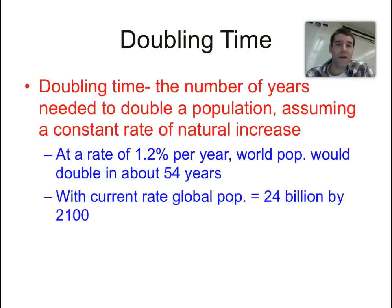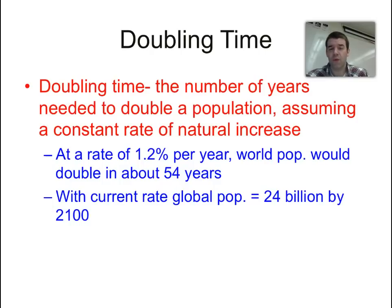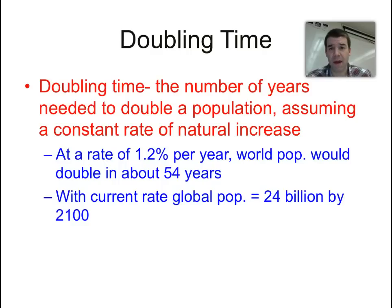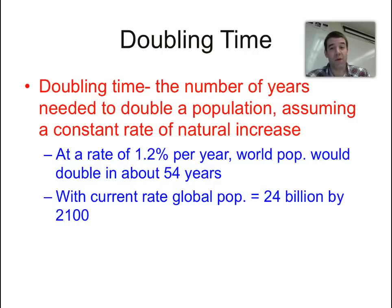What we also want to consider is the doubling time. There's a rule of 72 in geography — sometimes you see it as the rule of 70, even the rule of 69. But it's a simple mathematical equation — and don't ask me, go talk to your math teacher — it's a simple equation of using the rate of increase to determine how many years it's going to take for a population to double.